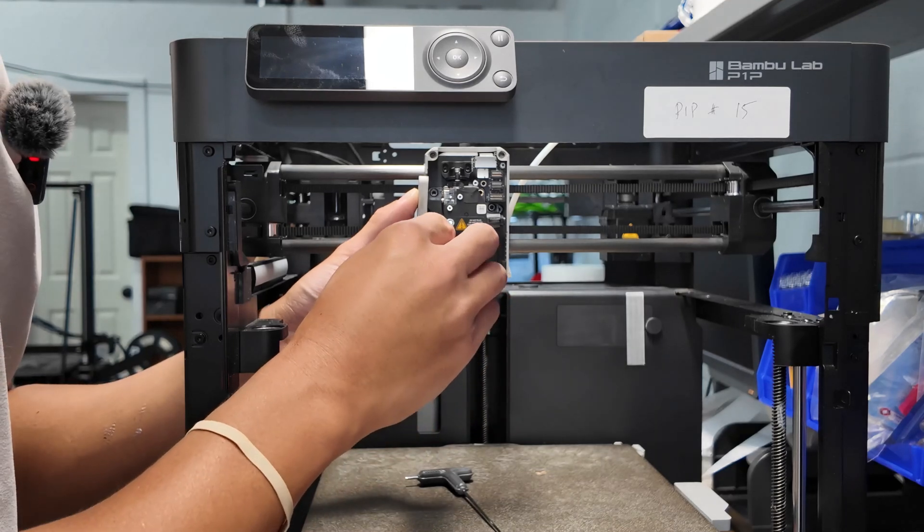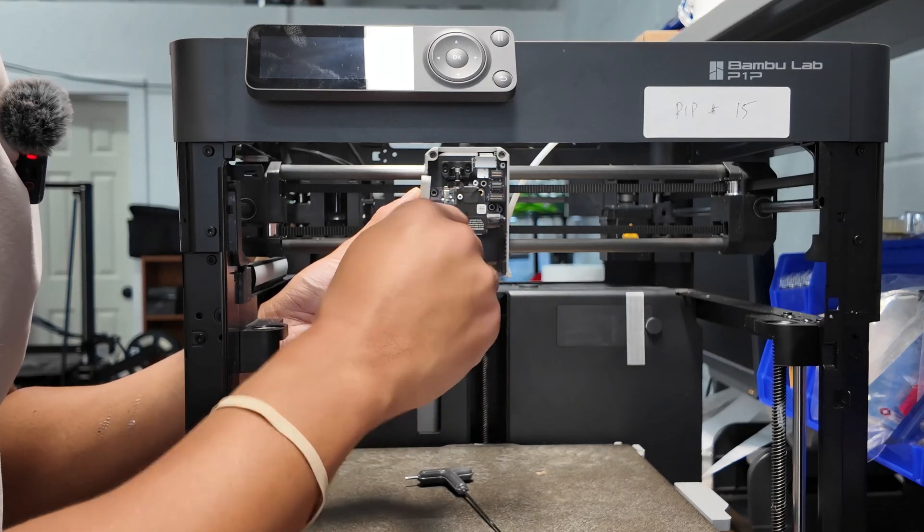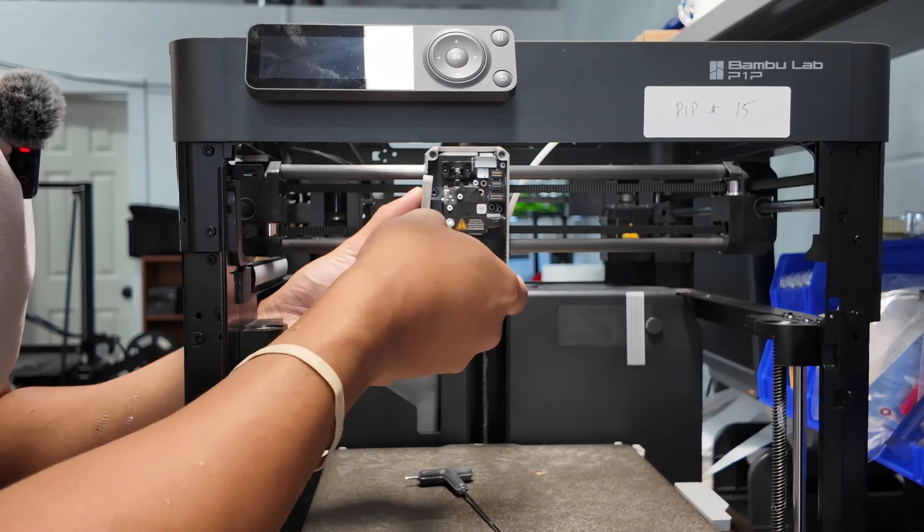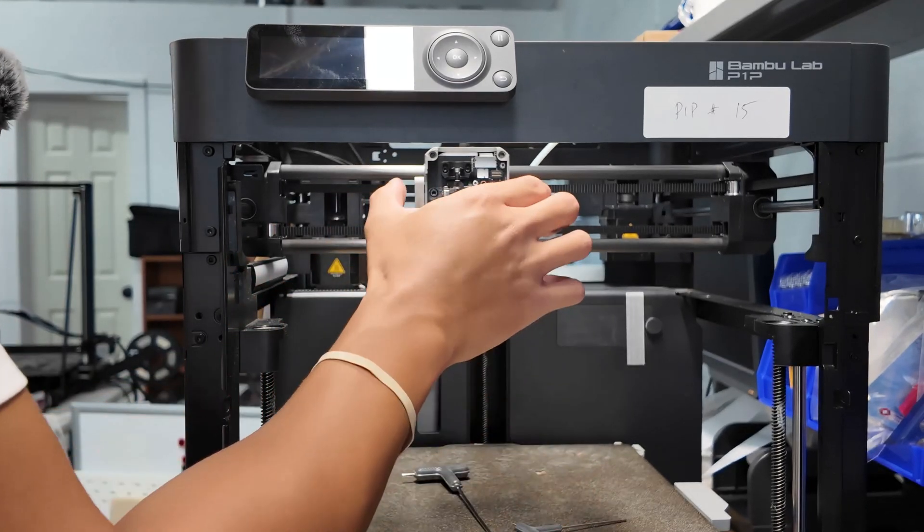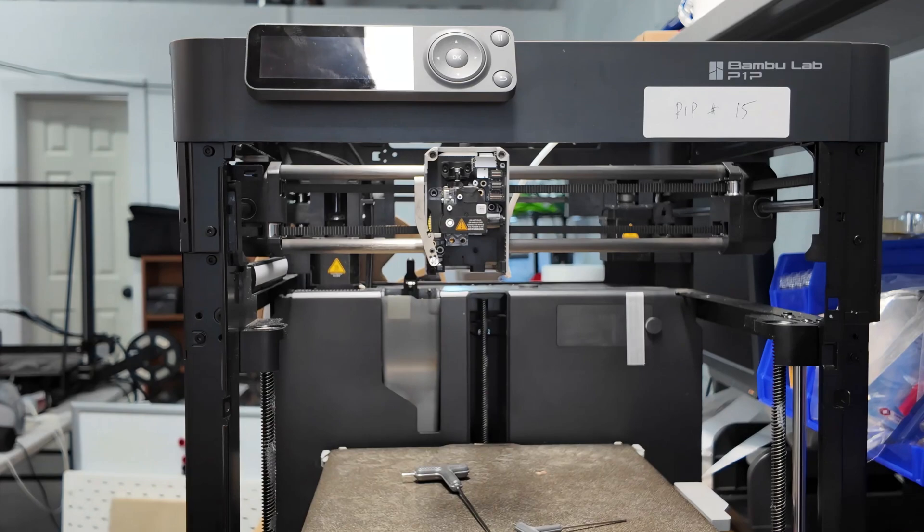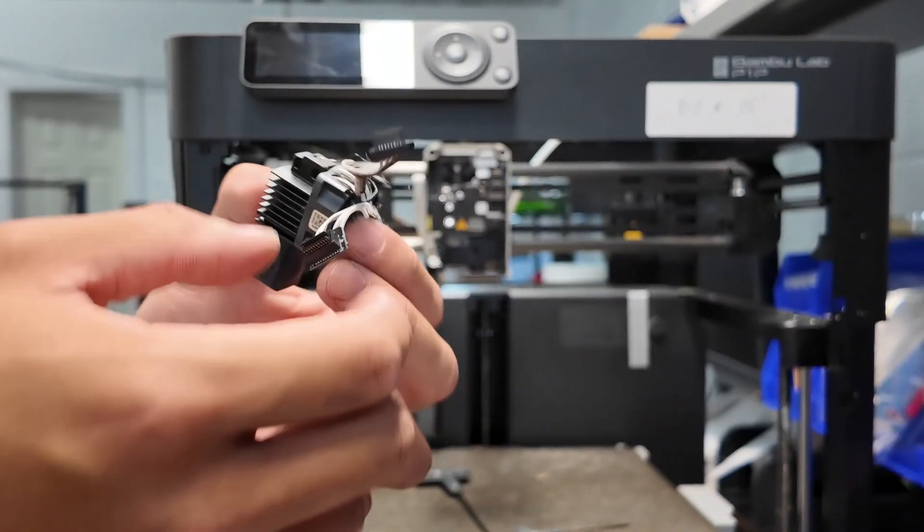But basically you just slide this back into its slot. And while you're holding it, screw this guy back in so that there's tension here. And don't want to over-tighten it. There you go. That's it. And now put the extruder back into place.